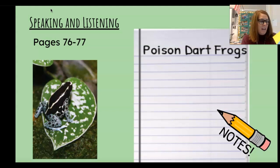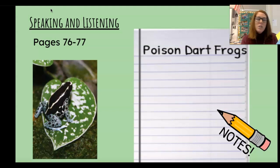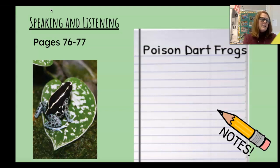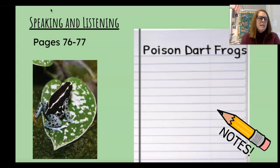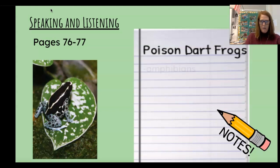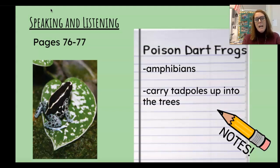Some amphibians lay a lot of eggs and leave the young to fend for themselves. Poison dart frogs are not like that — they are dedicated parents. The adult frogs carry their newly hatched tadpoles up into the canopy, or tops of trees above the rainforest. They carry the baby tadpoles on their backs one at a time. The parents secrete sticky mucus that keeps the tadpoles from falling off during the climb. That's very interesting because I thought tadpoles needed to be in water to survive.